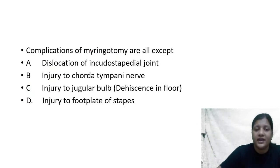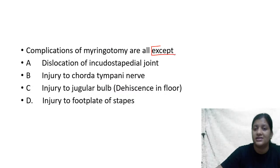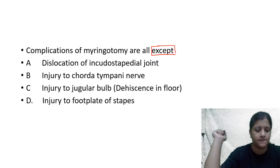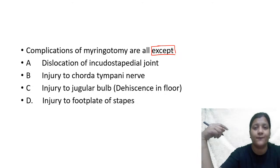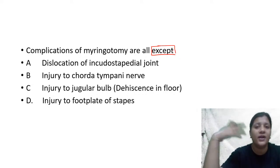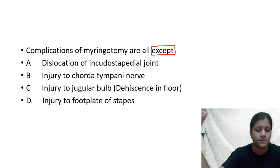Complications of myringotomy are all except: A: dislocation of the incudostapedial joint, B: injury to the chorda tympani nerve, C: injury to the jugular bulb, D: injury to the foot plate of the stapes. In today's class I will be very fast — the moment you give me the answer we will briefly discuss and move to the next question.